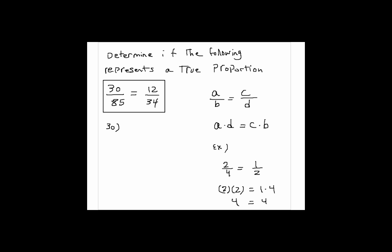So if I have 30 times 34, if that is the same as, I put a question mark here, 12 times 85, then the answer would be yes. So if I multiply 30 times 34, that would give me 1020, and so is the other one. So the answer is yes, it is a true proportion.